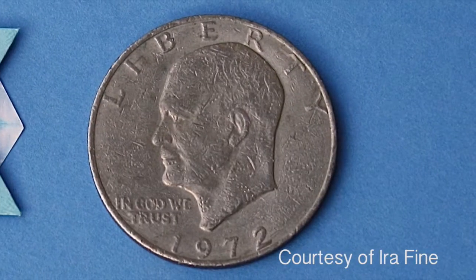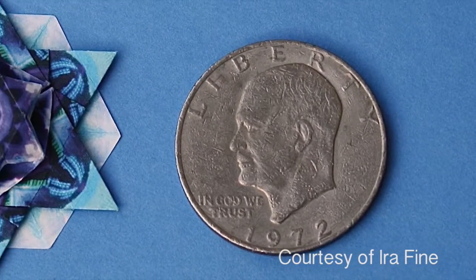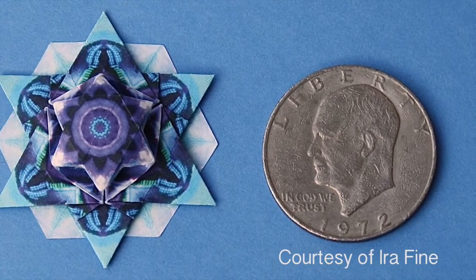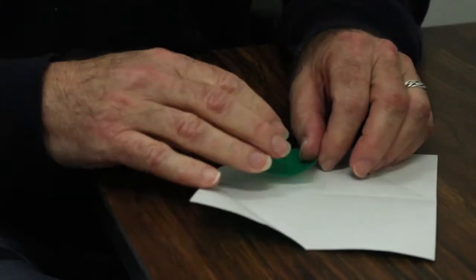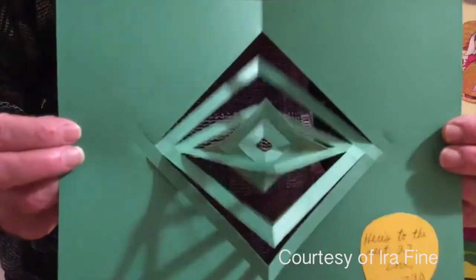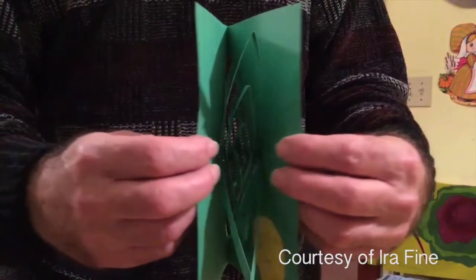I saw online what other origami people were doing, what papers were available to use, how different models can be created and made at a high level. On the internet, you can, in a virtual way, find all kinds of people and other information about it. That's when I really started to get into it.